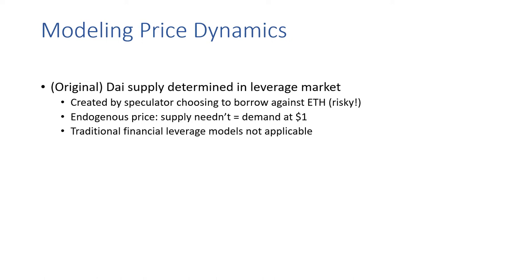The market has an endogenous stablecoin price. In particular, the supply needn't always equal demand at the $1 price, and we really have to hope that the incentives in place lead to maintenance of the peg.